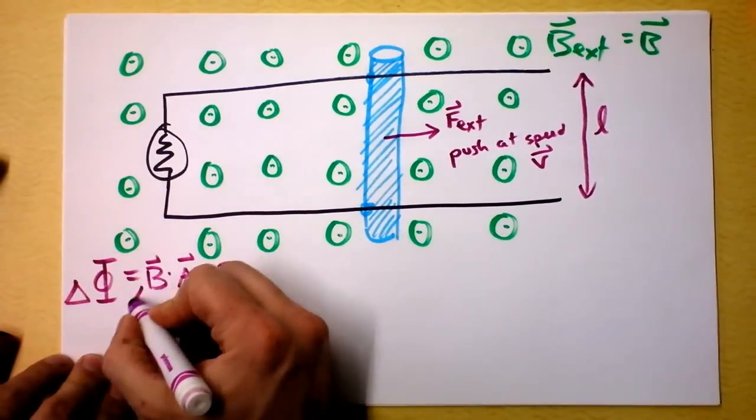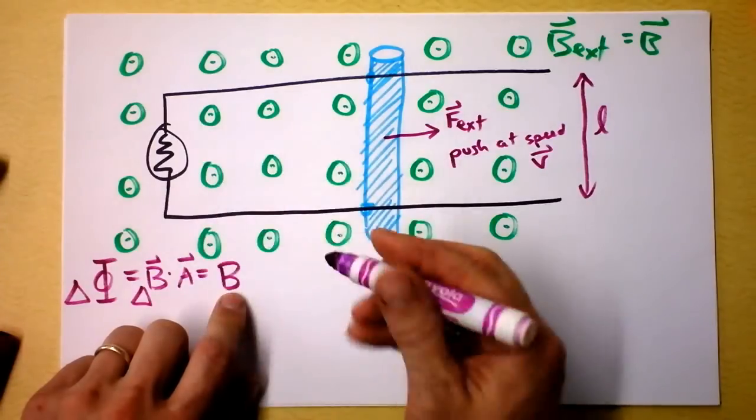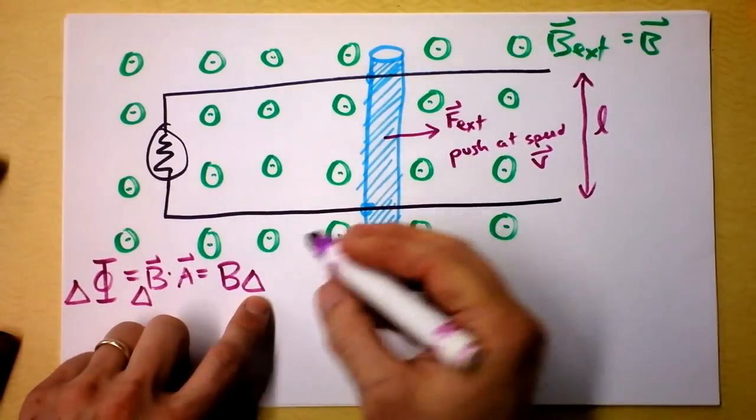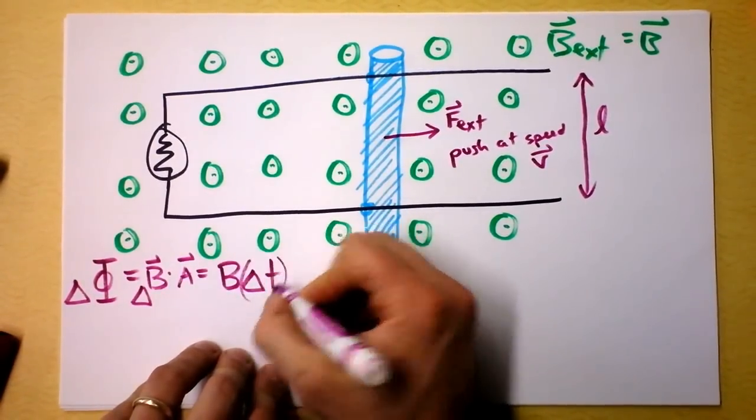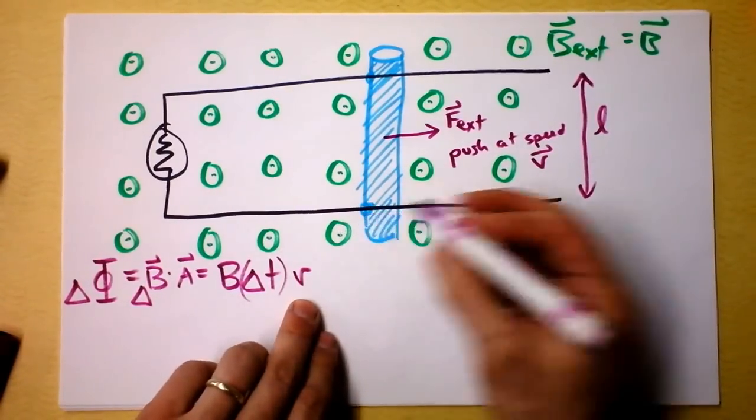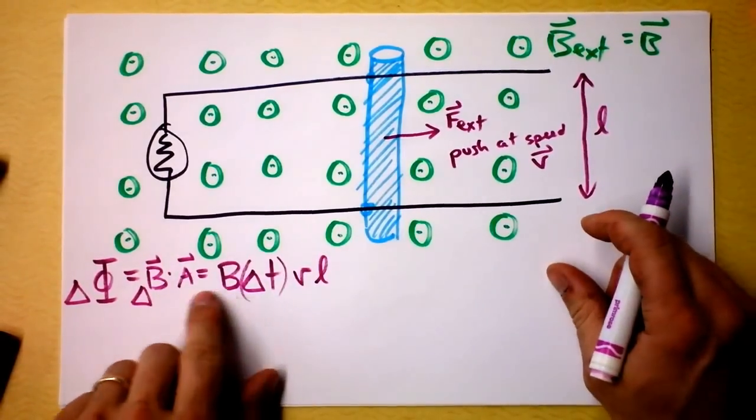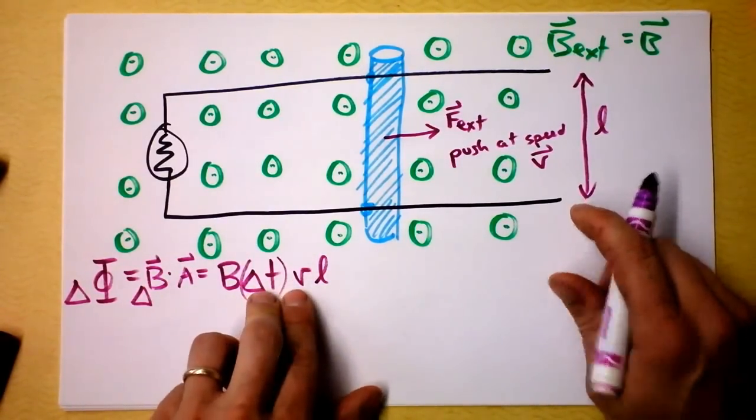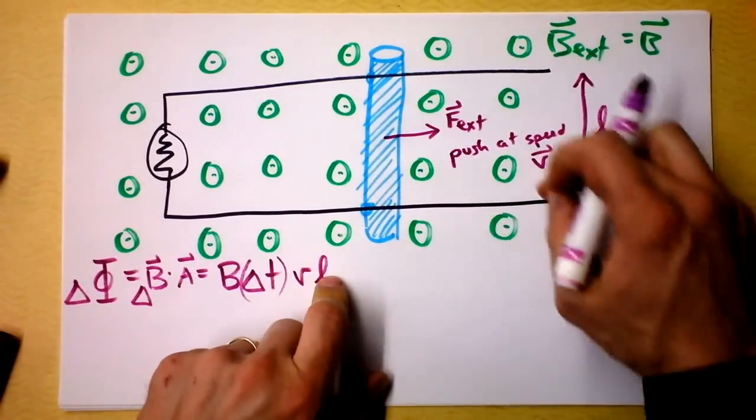So what if instead I looked for delta phi. Delta phi is going to be the magnetic field which is constant so I don't have to delta that. And then I'm going to say that the change in width is just the change in time times the velocity. That's the change in width and then I need to multiply that by the length and I've found the area. I'm trying to find the change in area and so that should be the change in width which is delta T times V multiplied by the length.